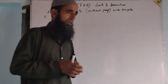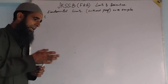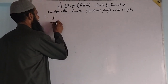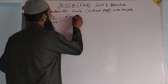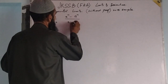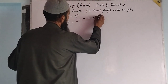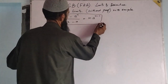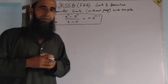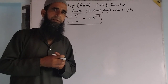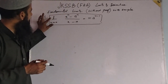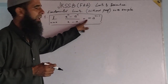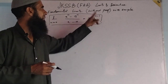The first fundamental limit we will discuss here is: the limit as x tends to a of x raised to power n minus a raised to power n, divided by x minus a, is equal to n into a raised to power n minus 1. Remember this fundamental limit — it is very important.